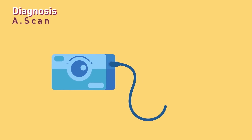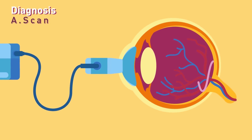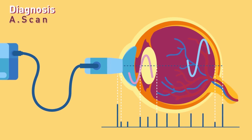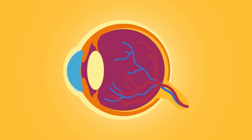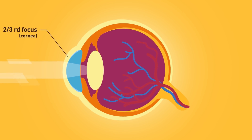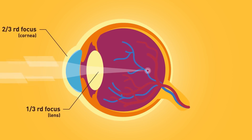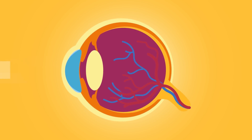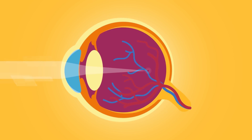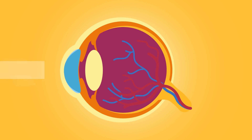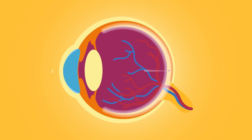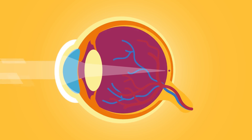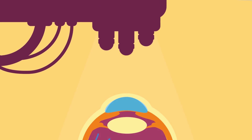A-scan: a small ultrasound probe that throws ultrasound waves into the eyeball and detects their reflections or echo timings, calculating the eyeball length. Treatment: unlike the camera, maximum two-thirds of focusing in an eye is done by the cornea, while the remaining one-third is done by the lens. To treat myopia, we must decrease the focusing power of the eye so that the image is formed on the retina instead of in front of it. This can be done using a diverging lens — such as glasses or contact lenses — or a surgical procedure.